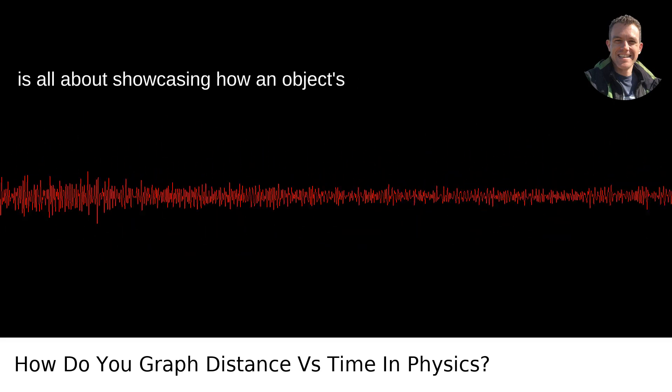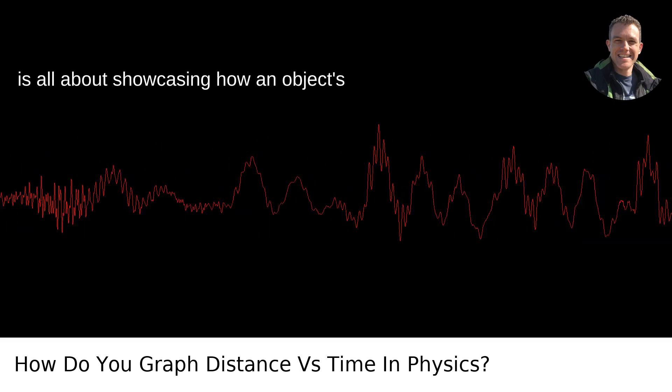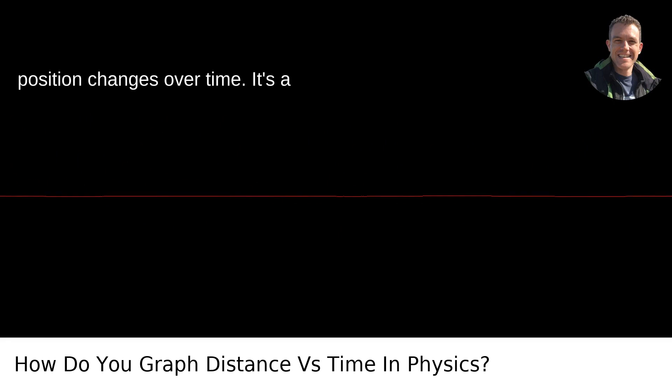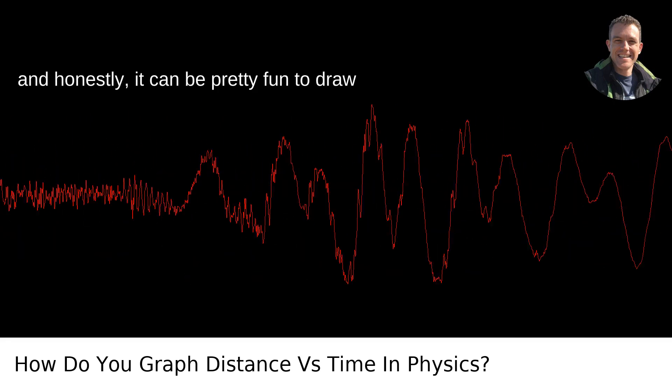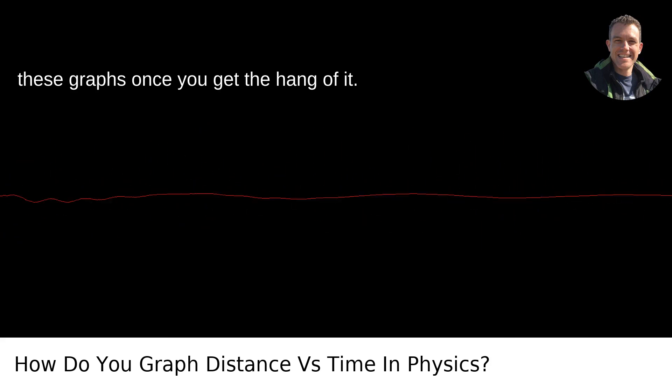Graphing distance versus time in physics is all about showcasing how an object's position changes over time. It's a critical concept for understanding motion, and honestly, it can be pretty fun to draw these graphs once you get the hang of it.